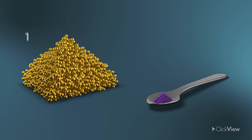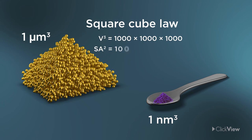Each micrometre-sized particle is 1,000 times bigger than each nanoparticle. Obeying the square cube law, they have one billion times the volume, but only one million times the surface area.